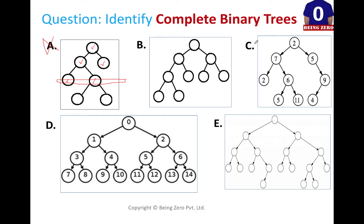Let's move to C and see whether C is a complete binary tree. You start looking at the first level — there is one node; second level, there are two; third level, ideally there should have been four, but there are only three. So you can make a judgment whether this is a complete binary tree or not.